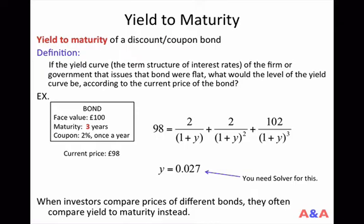Most of the time it is the case that the longer the time to maturity, the higher the annual interest rate, so that the term structure of interest rates is upward sloping. Of course, sometimes the term structure is downward sloping or inverted, or sometimes U-shaped or hump-shaped, or sometimes flat. The whole point is that the interest rate to borrow for 1 year, 2 years, and 3 years can all be different.